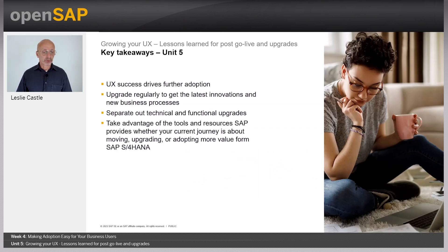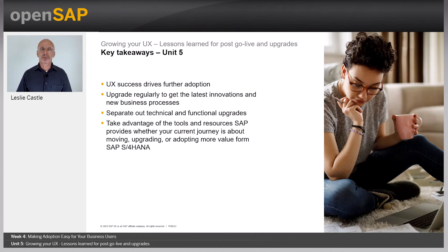That brings us to the end of Unit 5. The key takeaways are: UX success drives further adoption — if you get things right, adoption will be high and users will come back to you with more. You need to upgrade regularly to get the latest innovations and business processes. The more frequently you upgrade, the smaller the delta and the easier it is. It's important to separate technical and functional upgrades to minimize scope and risk, and take advantage of the tools and resources SAP provides, whether your journey is about moving, upgrading, or adopting more value from SAP S/4HANA.